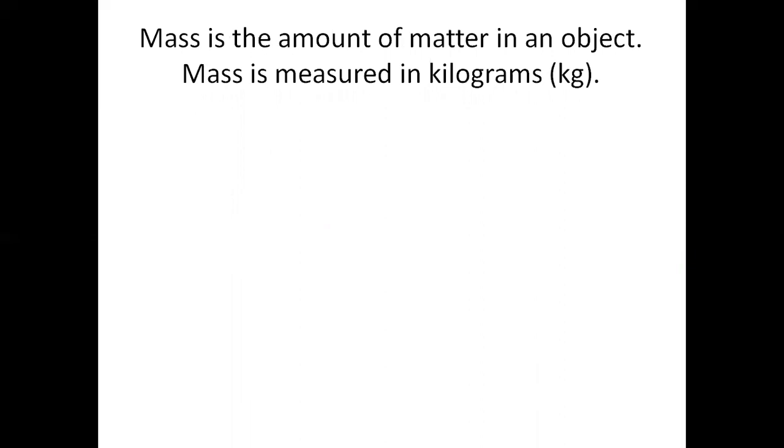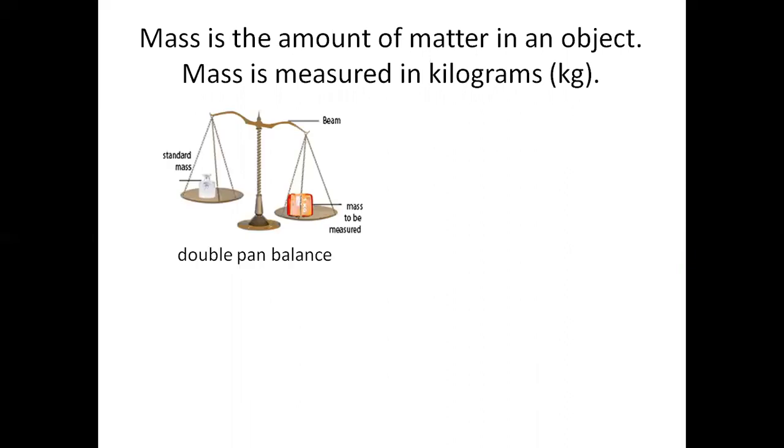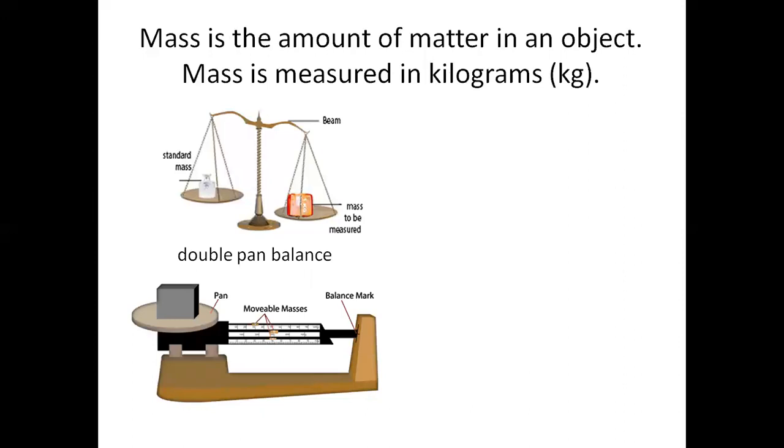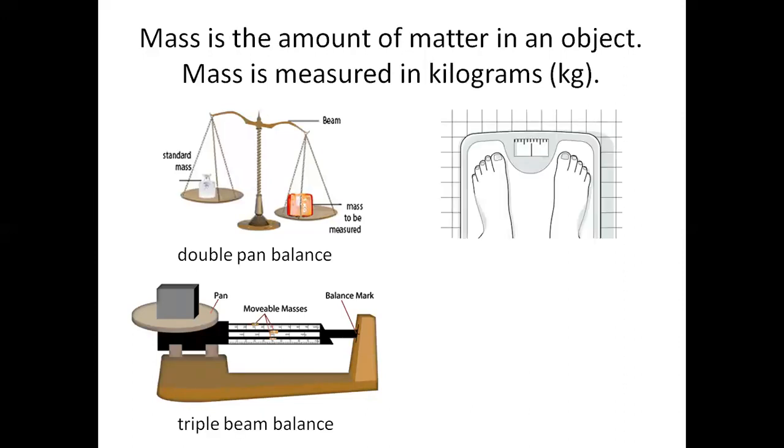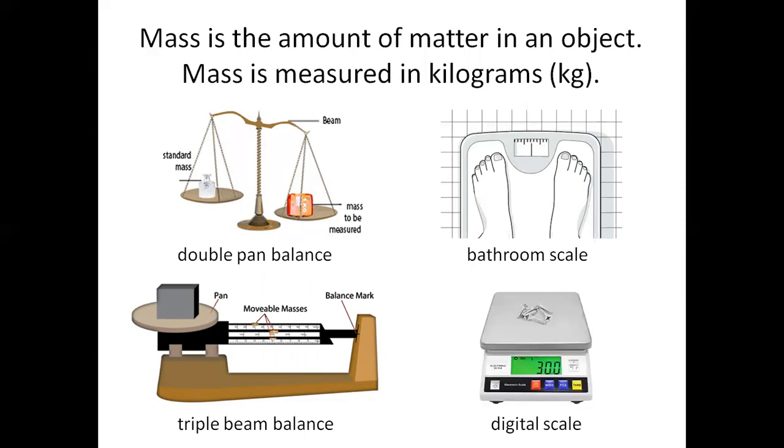Mass is the amount of matter in an object. Mass is measured in kilograms. The instruments to measure mass: we can measure it on a double pan balance, on a triple beam balance, on a bathroom scale, or on a digital scale.